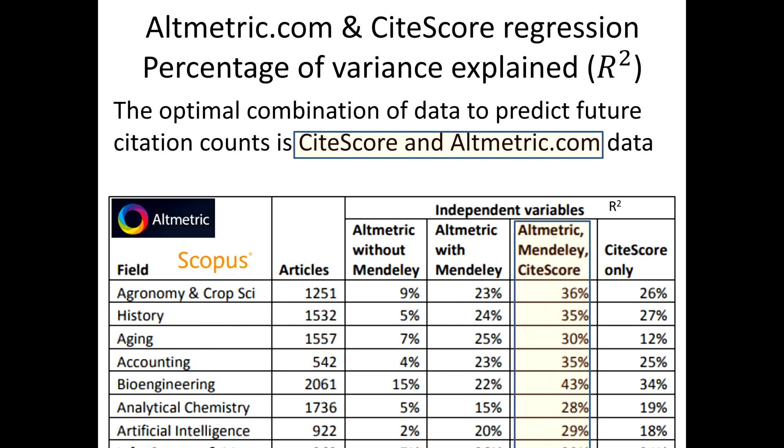Here's a table showing evidence for altmetrics with and without Mendeley. Adding Mendeley substantially improves the percentage prediction. Adding the journal impact factor — in this case Scopus's CiteScore — also improves prediction considerably. In some fields you can get towards 50% prediction rate taking into account altmetrics and the journal impact factor.